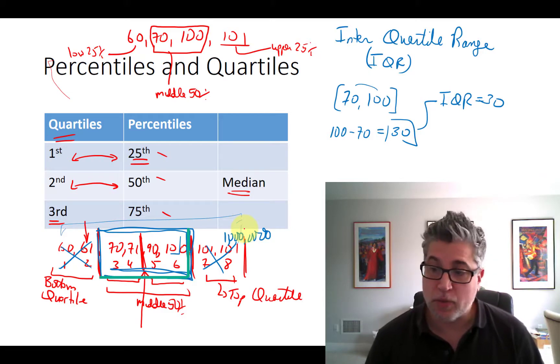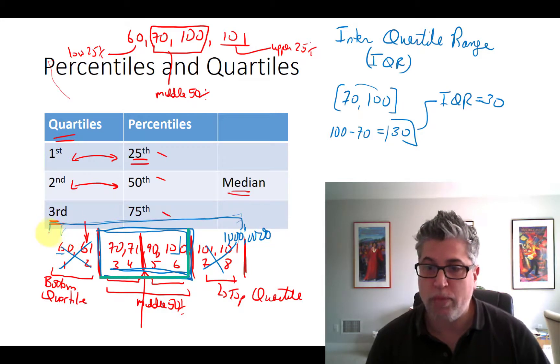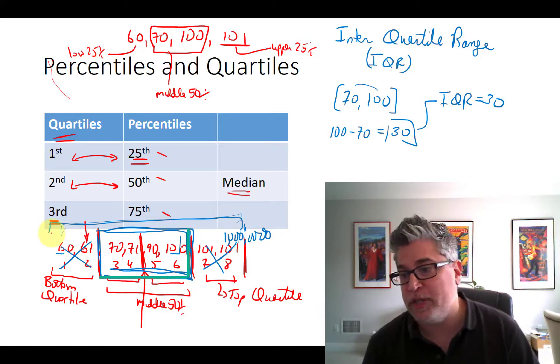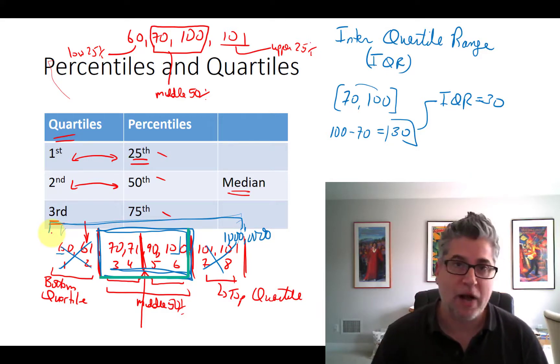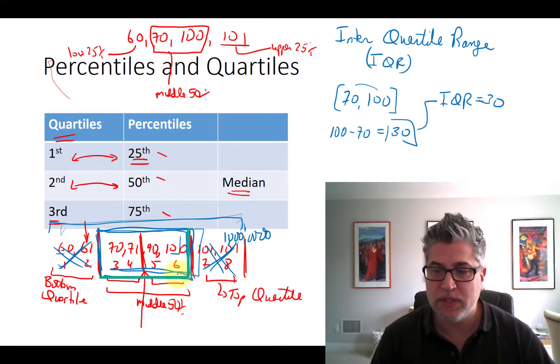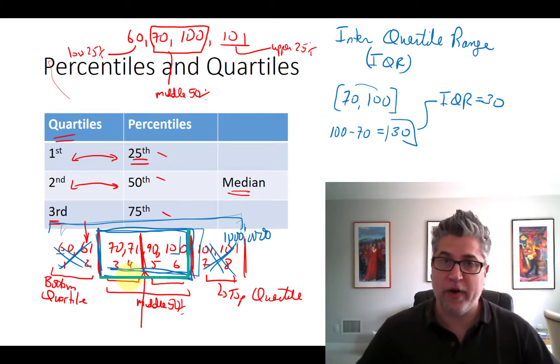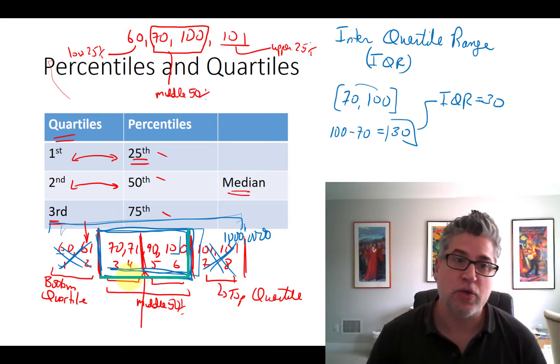So even though the range here is in the billions, the interquartile range hasn't changed at all. Which is neat, right, because the range itself is this number minus 60. The range changed a whole bunch. The range was sensitive to outliers. The interquartile range is much less sensitive to outliers because we cut out the top numbers, we cut out the bottom numbers, we're just focusing on the middle ones and asking how widely do those vary? So that's your interquartile range.